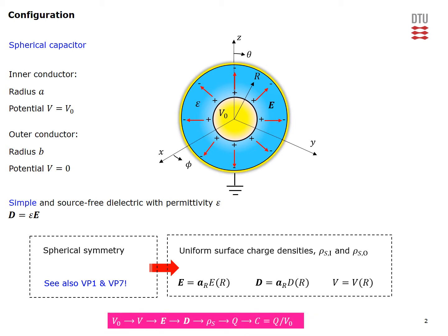So in this case, we assume a potential difference between our conductors and use an appropriate equation to get the potential at any point inside the dielectric. This leads to the electric field, which immediately gives the flux density in the dielectric. The flux density, using boundary conditions, gives the induced free surface charge density on the inner and outer conductors. These can be integrated to get the total charge in Coulombs, which yields the capacitance of our spherical capacitor.